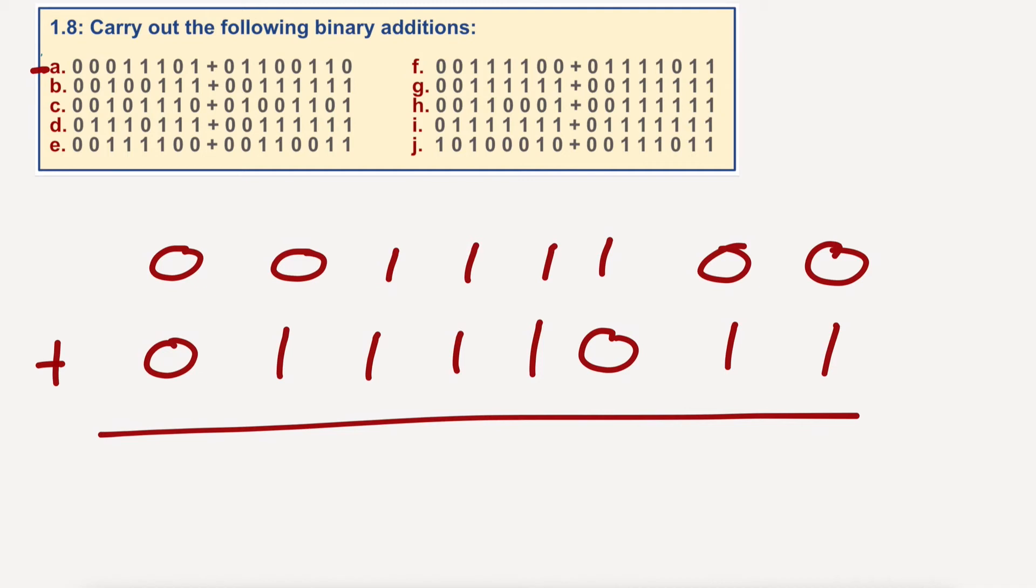Let's have a little look at this. One plus zero is one. Zero plus one is one. One plus zero is one. One plus one is two. So, zero and one. One plus one plus one is three.